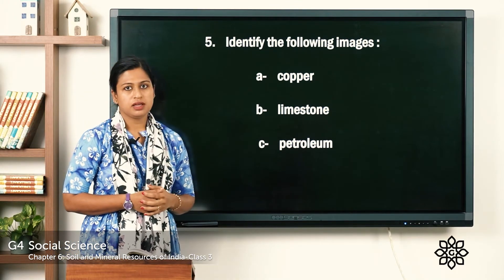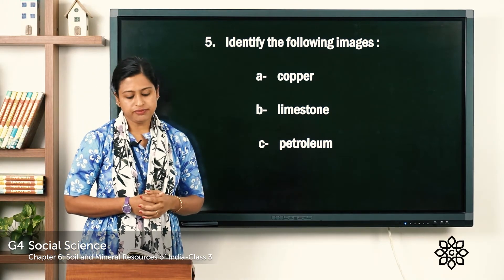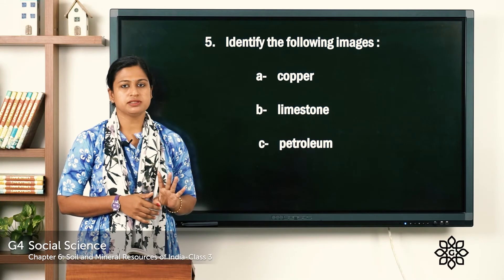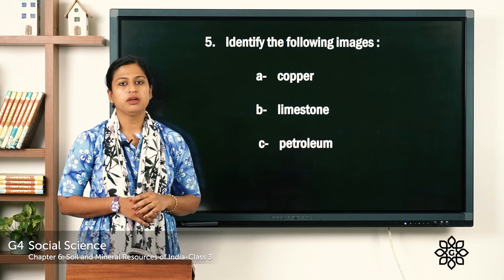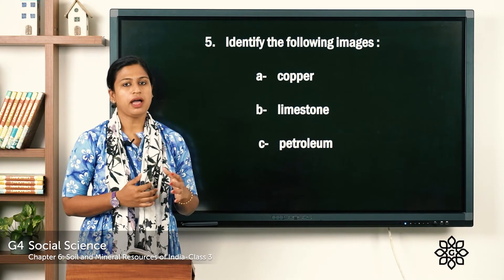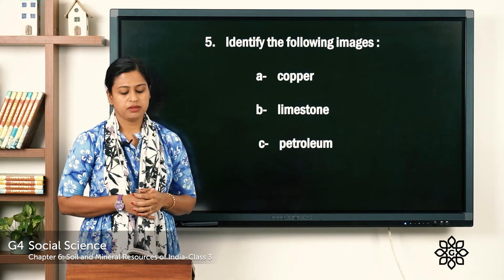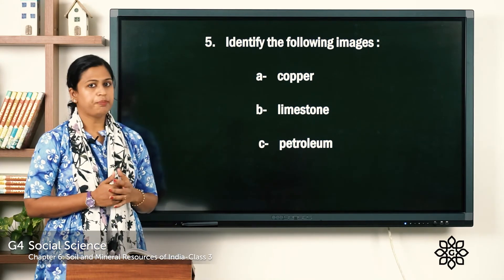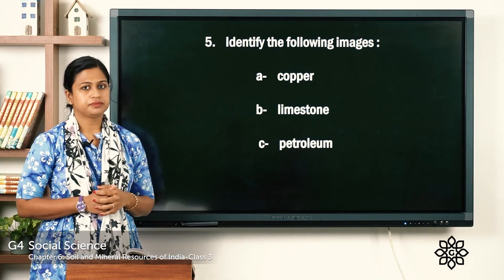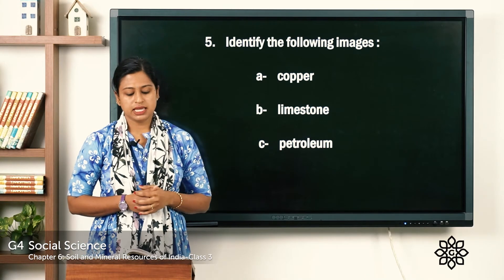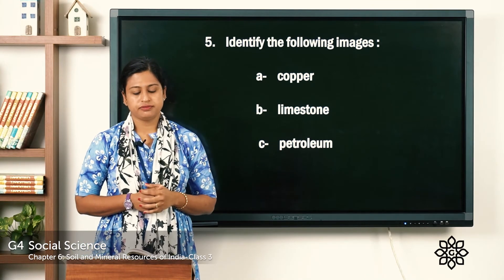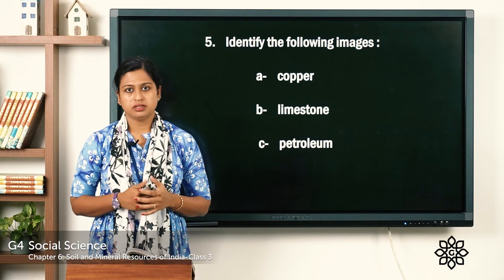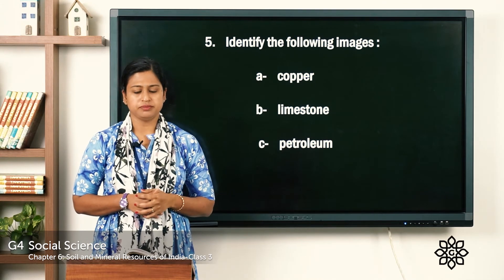The fifth question is: identify the following images. Three images are given — A, B and C — you have to identify them. The first picture is of copper, the second is of limestone, and the third is petroleum.